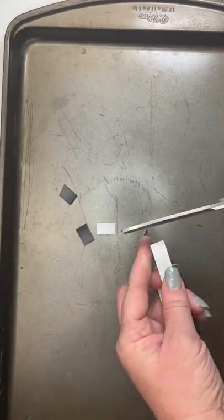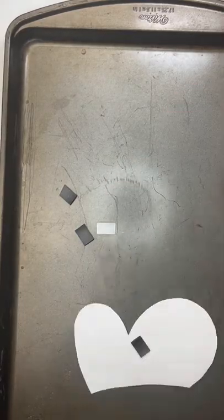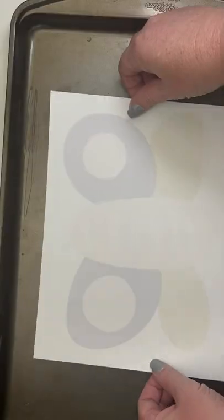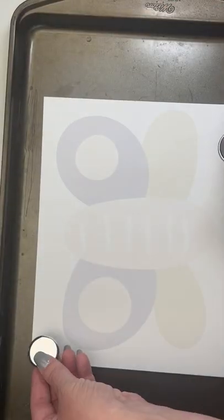Now take some magnetic tape and attach a small piece to the back of each puzzle piece. That's how the pieces stick to the board and don't move. Use big magnets to hold the puzzle base on the sheet.